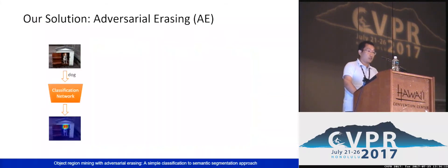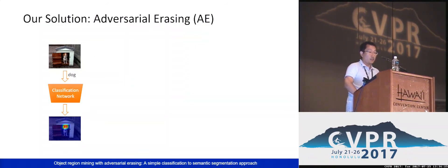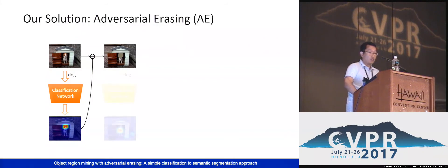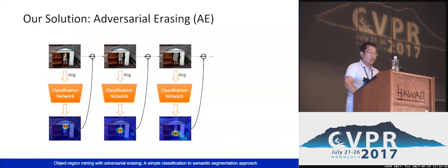Based on this motivation, we propose a very simple solution called adversarial erasing. We first train the classification network with original images, and the CAM method is employed to localize the most discriminative regions. Then, we erase the mined regions and retrain the network with the erased images. We continue this step for several times and merge the mined regions from multiple steps as output.